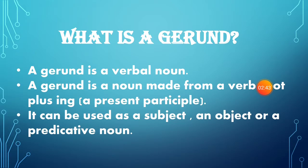A gerund can be used as a subject, as an object, and as a predicative noun. We know that only nouns and pronouns can be used as a subject or an object. A subject is a noun or pronoun that performs the action — a sentence tells us something about the subject. The words that answer the question 'what' and 'whom' are known as an object. A predicative noun is a noun used after a linking verb. For example, 'He is an engineer' — here 'is' is a linking verb joining 'he' with 'engineer,' so 'engineer' is a predicative noun.